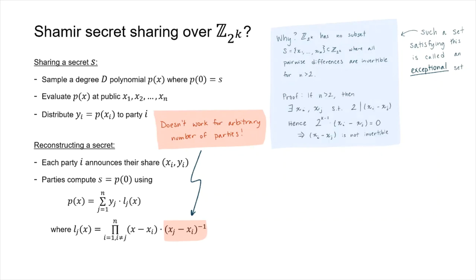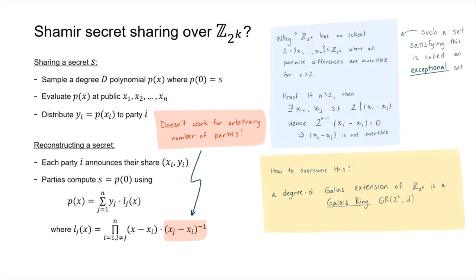So how do we overcome this if we do want to do Shamir over a ring? Similar to how you may use an extension field in the field case when your original field isn't large enough, we can do a similar idea for Z_{2^k}. Specifically, we can take a degree-d Galois extension of Z_{2^k}, which is a Galois ring.